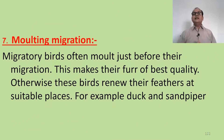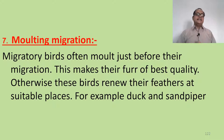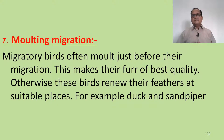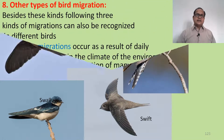The seventh type is molting migration. Molting migration means migratory birds often molt just before their migration. This gives their feathers the best quality; otherwise, these birds renew their feathers at suitable places. Examples include the duck and sandpiper. Other migratory birds include the swallow, cuckoo, swift, and swallow.